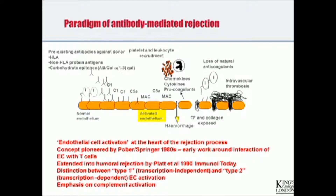The antibodies bind and complement is fixed, generating different types of effector molecules, and the endothelium becomes activated. As a result, it secretes various molecules to attract platelets and leukocytes. The cells shrink away from each other so the endothelium becomes leaky, and many molecules that inhibit coagulation are lost through various mechanisms. The result, in its most florid manifestation, is intravascular thrombosis, which causes rejection within minutes or a few hours of revascularizing the organ.